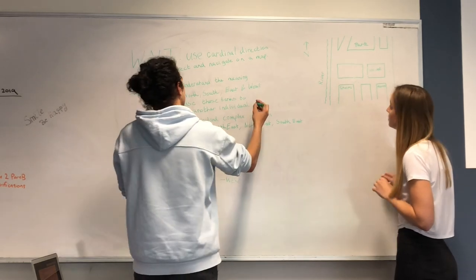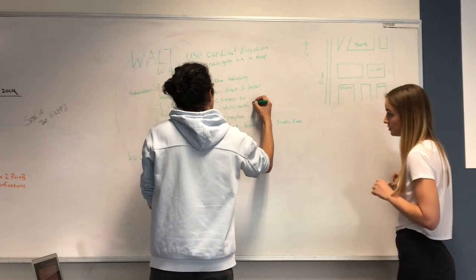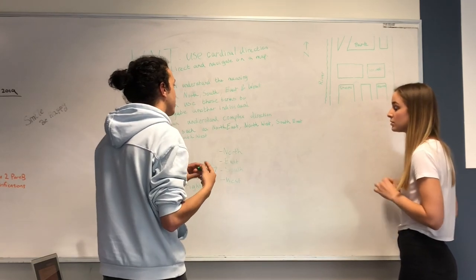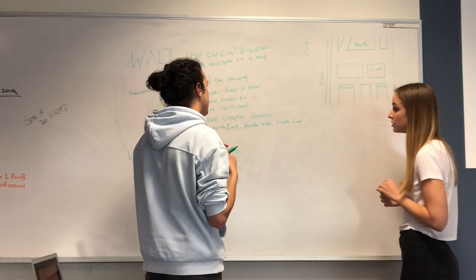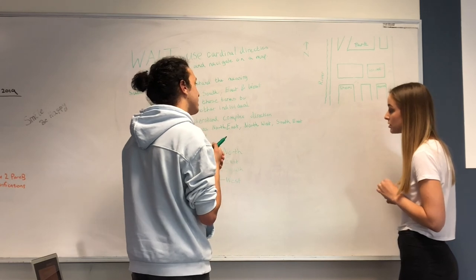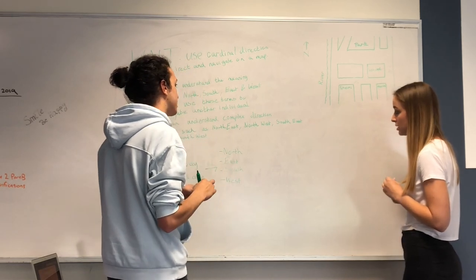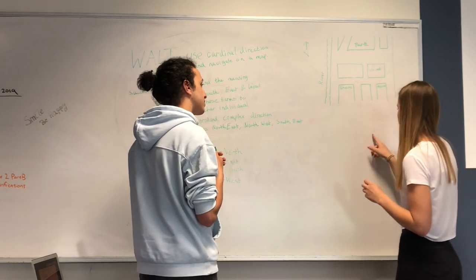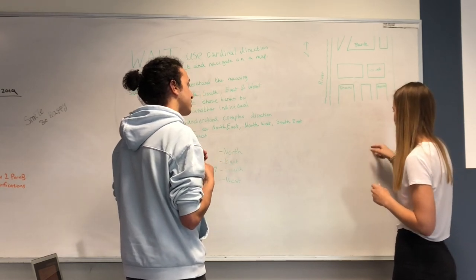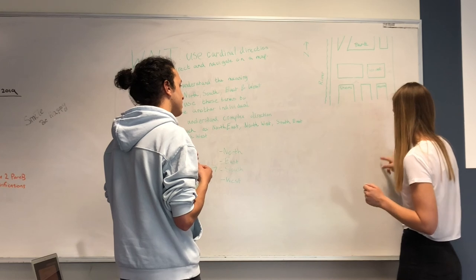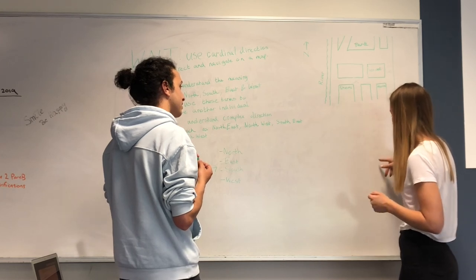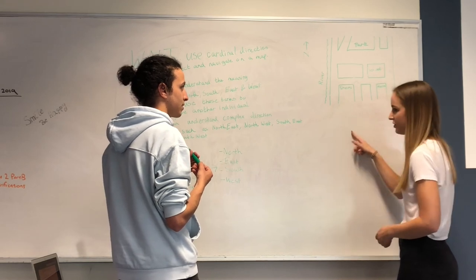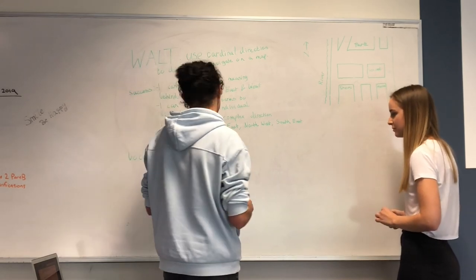And you showed me just before, you can use these terms to navigate another individual. And how would we know where northeast and northwest, and southeast and southwest be? The in-between north and east would be northeast, between east and south is southeast, between south and west is southwest, and between west and north is northwest. Great stuff. Thank you.